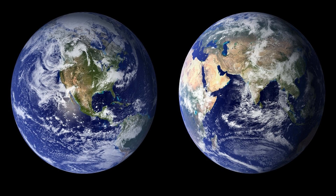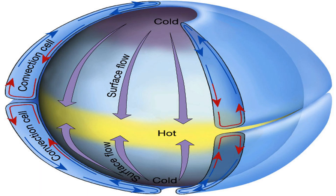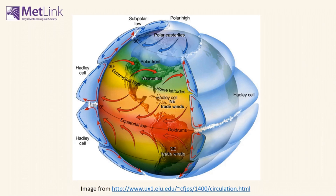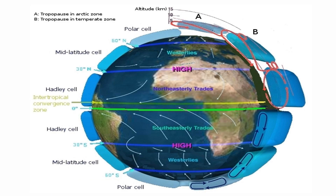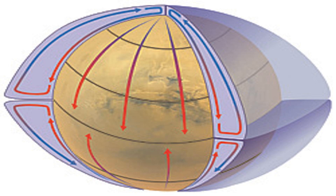Atmospheric circulation refers to the large-scale movement of air driven by a combination of factors, including solar radiation, Earth's rotation, and the distribution of land and water. This circulation consists of global wind patterns and local wind systems. The continuous movement of air helps distribute heat and moisture across the planet, playing a vital role in regulating temperatures and influencing the patterns of weather and climate. Understanding atmospheric circulation is crucial in unraveling the mechanisms behind the changing of seasons.